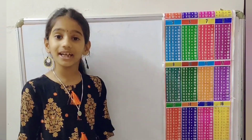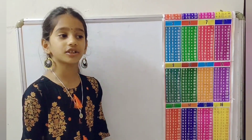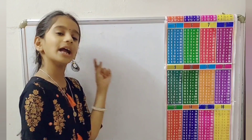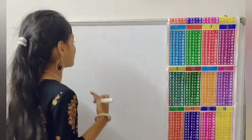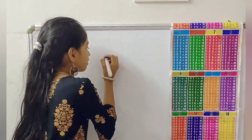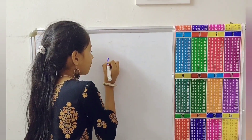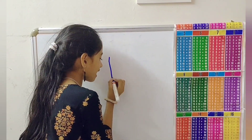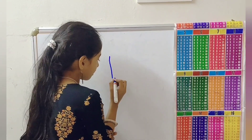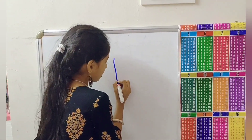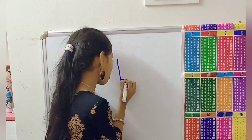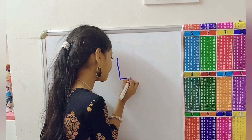Hi friends, now I am going to make capital letter L. First I will check the white button. One standing line and right of the standing line, one sleeping line.